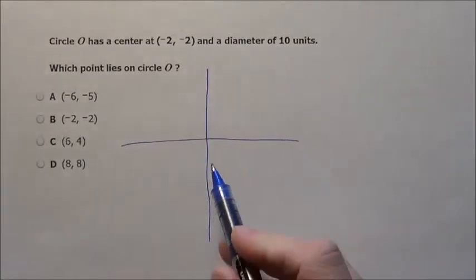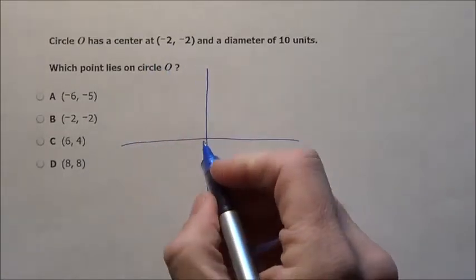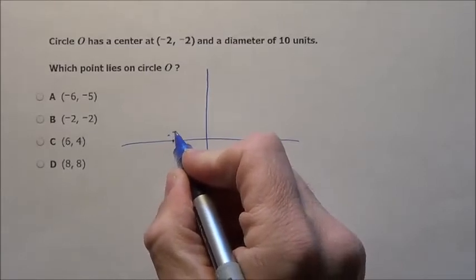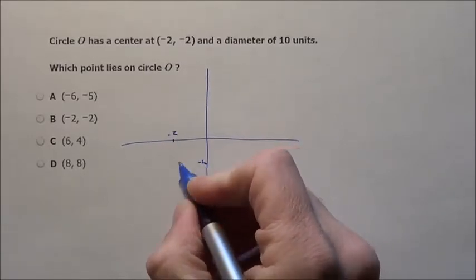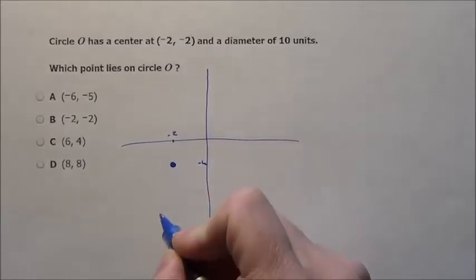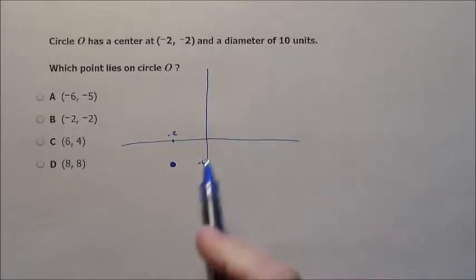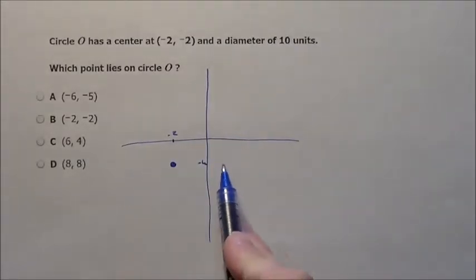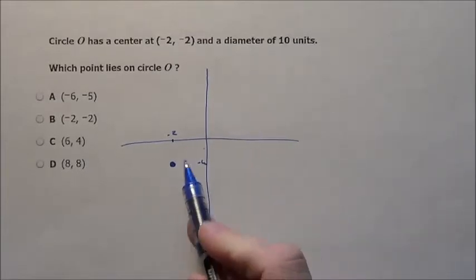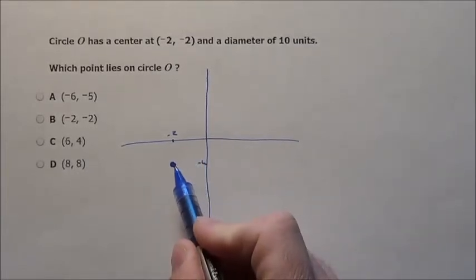Here we are on our coordinate grid. The center is at negative 2, go over negative 2 and down negative 2. Our center is right here. It has a diameter of 10 units. That means from one end of the circle to the other it is 10. What does that mean the radius is? That means the radius is 5.